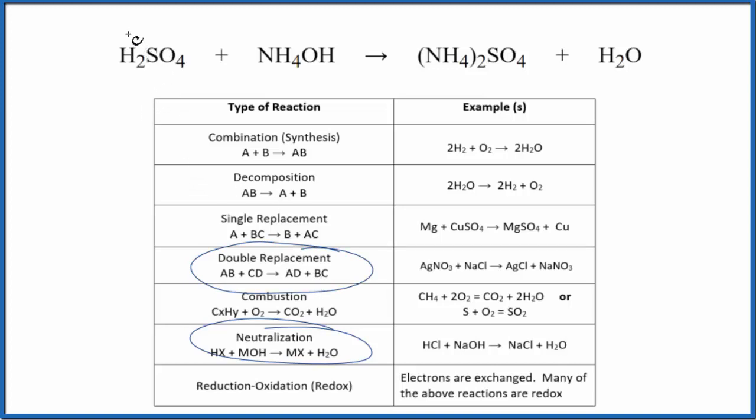Hydrogen, each hydrogen has a 1 plus ionic charge. The sulfate is 2 minus. The ammonium ion that's 1 plus as well and the hydroxide that's 1 minus.